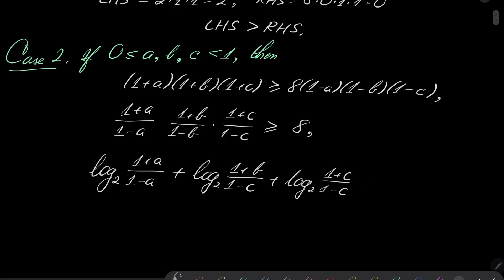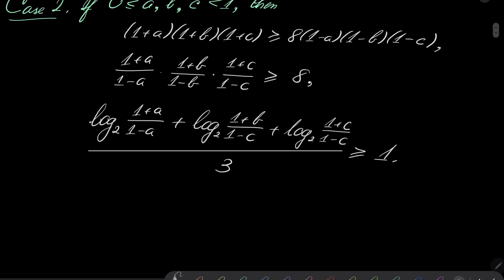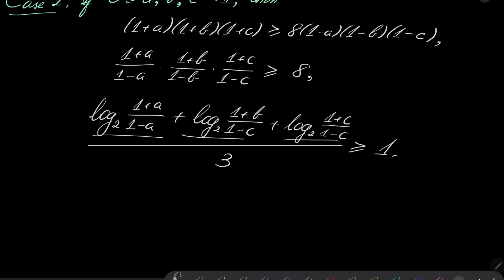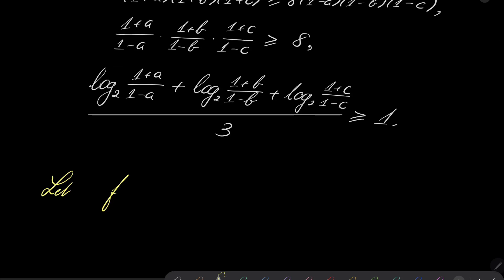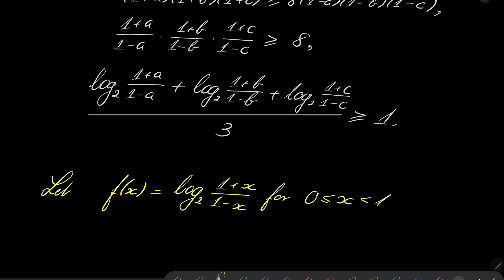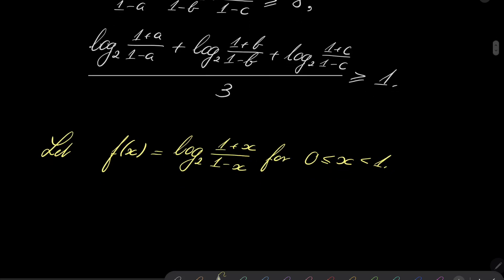We can write this using the function: let f(x) = log₂((1+x)/(1-x)) for x in the interval (0,1). I claim that this function is strictly convex, and to show that I will compute the first derivative and possibly the second. The derivative of the binary logarithm gives us 1/(ln(2) · (1+x)/(1-x)), times the derivative of (1+x)/(1-x), which has denominator (1-x)².